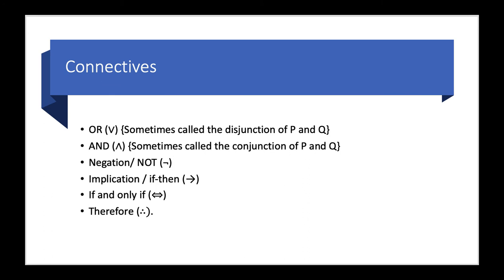So here are six connectives. The actual symbol used is in parentheses. For OR, we have a symbol that looks like a V. This is sometimes called the disjunction of P and Q. AND, with a symbol like a misshapen A, sometimes called the conjunction of P and Q. We have negation, and that symbol itself, I've seen it in many forms, but here's the form that I see in most books, this form here.